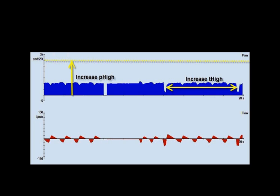We can also improve oxygenation by increasing P-high or P-high and T-high at the same time. One way is to increase the P-high to inclusion. By achieving a threshold opening pressure, the P-high should be adjusted only by two to five centimeter increments while monitoring hemodynamics — no higher than 30 centimeters of water.